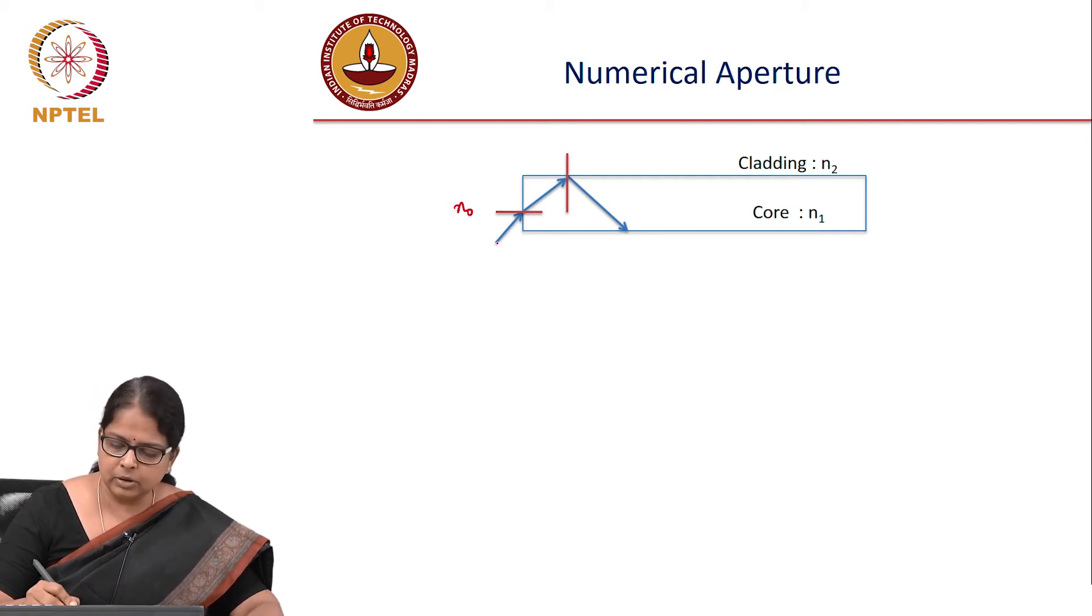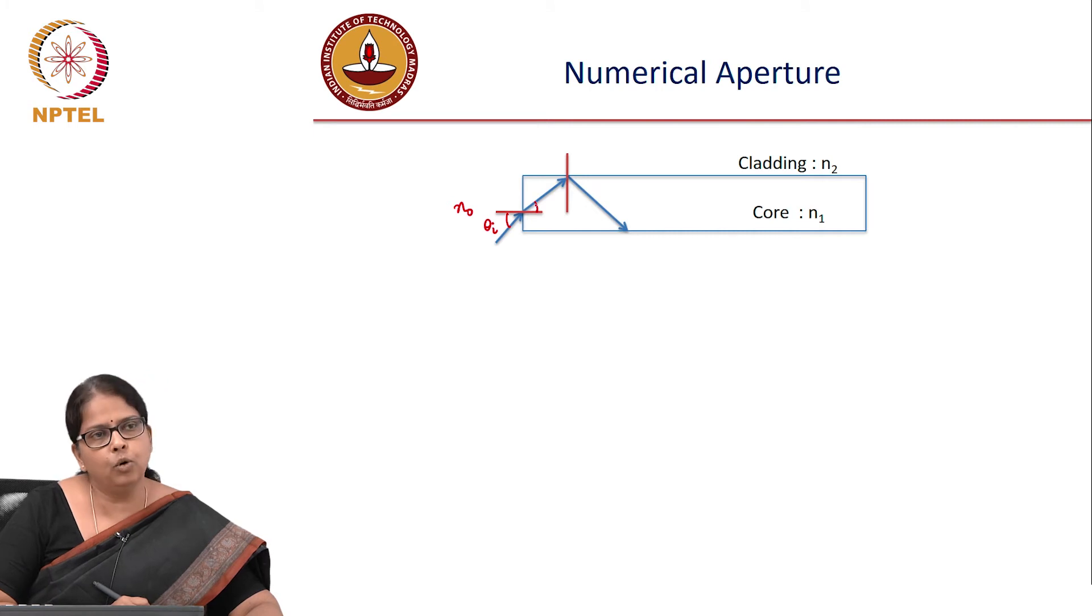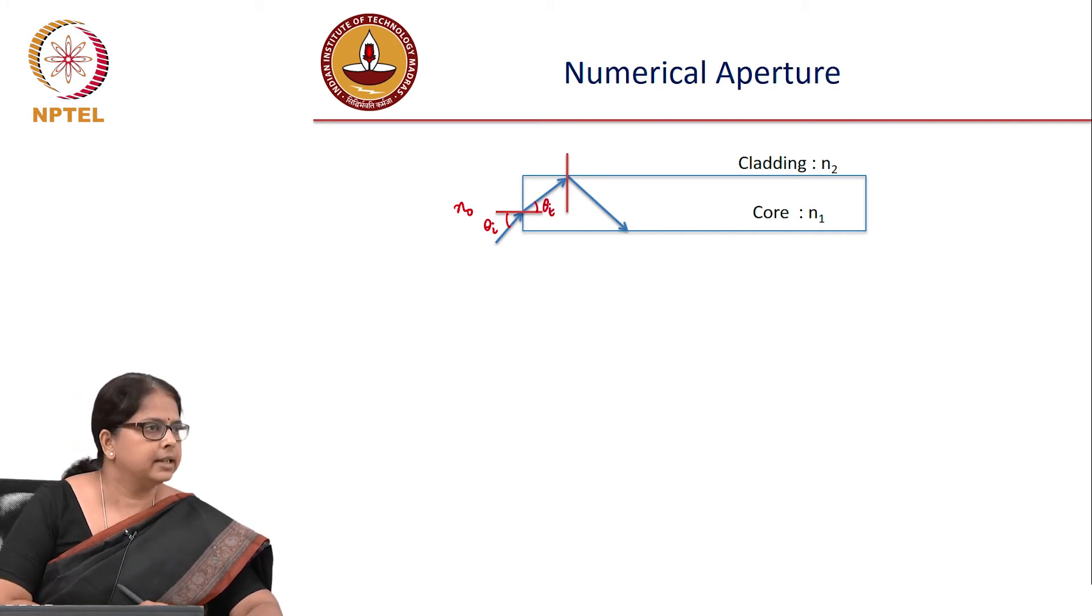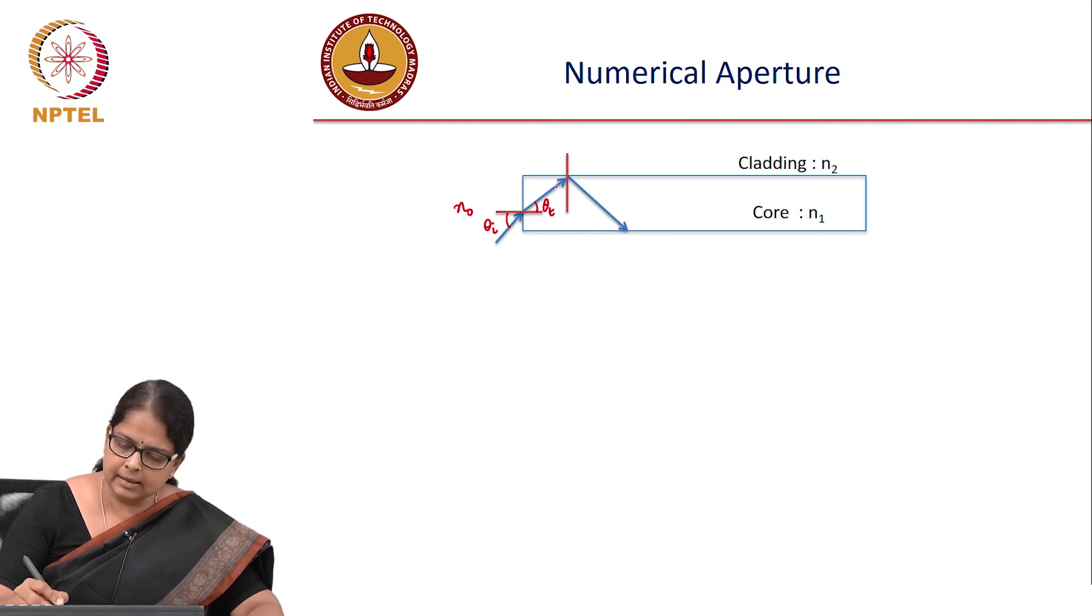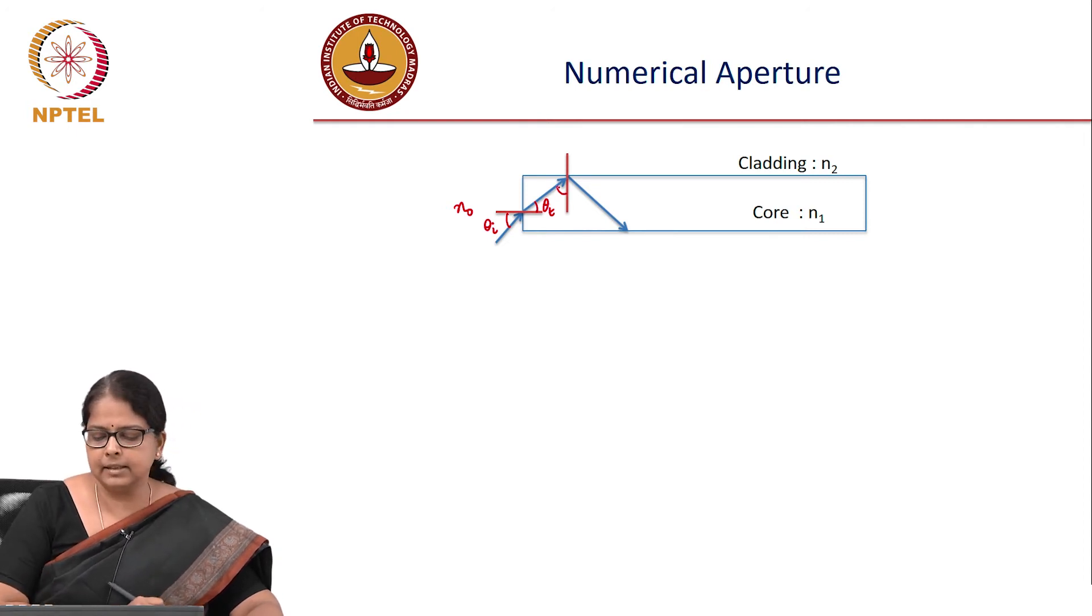We know that when incident light falls at an angle θᵢ, there is refraction at the air-core boundary. Let's say θₜ is the transmitted angle. The incident angle at the core-cladding interface is 90 degrees minus θₜ.